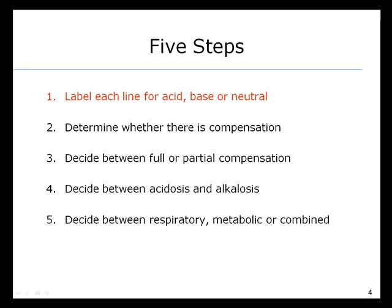Here are the five steps for rapidly interpreting arterial blood gas values. The first, and unequivocally the most important step, is to label each line for acid, base, or neutral. Step two is to determine whether there is or is not compensation. Step three is to decide between full or partial compensation. Step four is to decide between acidosis and alkalosis. Step five is to decide between respiratory, metabolic, or combined.